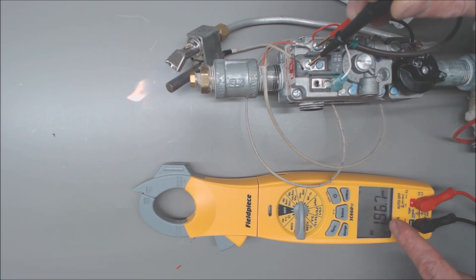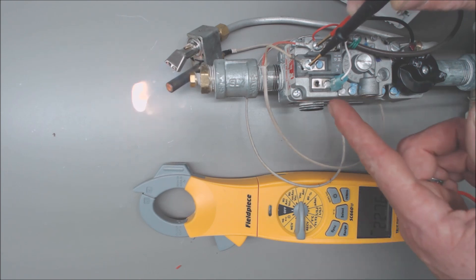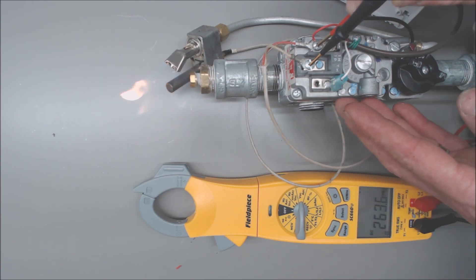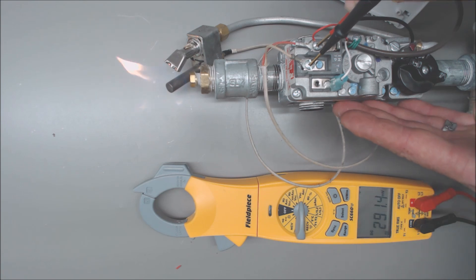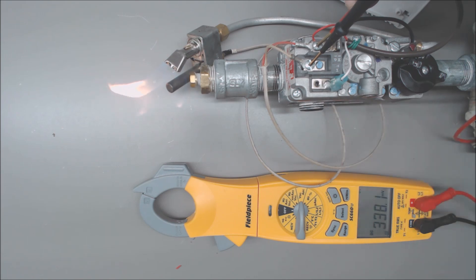You want to wait for your millivolts DC reading to get up towards 600 millivolts before you try to put a load on it, meaning you're going to turn the heat on. Once that happens, the voltage is going to drop. You just want to make sure that you maintain a DC millivolt reading above 190 millivolts DC, and that will allow this millivolt gas valve to work properly.